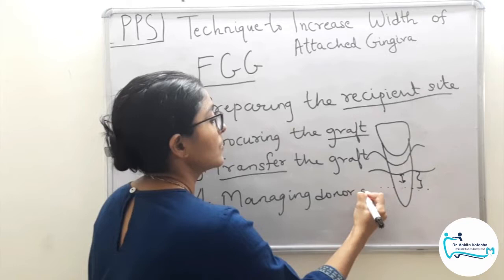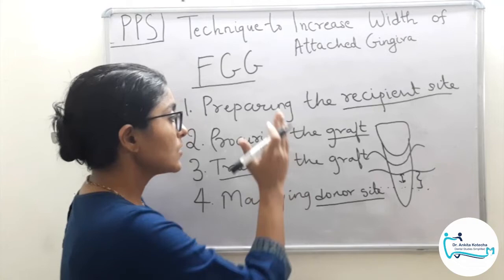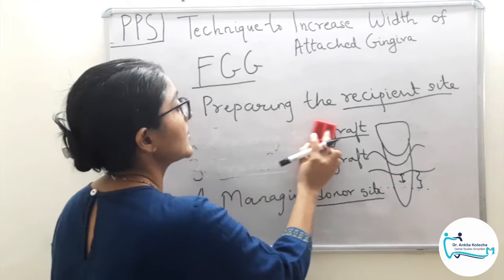After managing the wound, ensure that bleeding is arrested — only then discharge the patient from your center. These are the following steps in the surgical procedure of free gingival graft. Now we will discuss each step in detail.